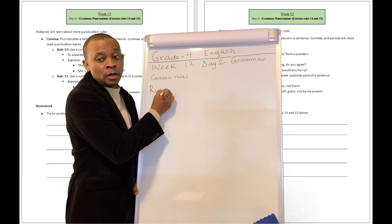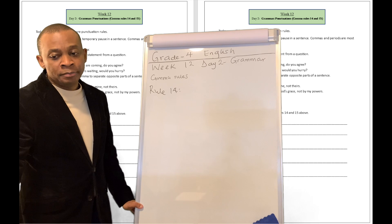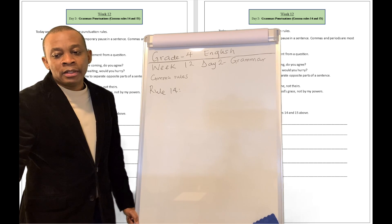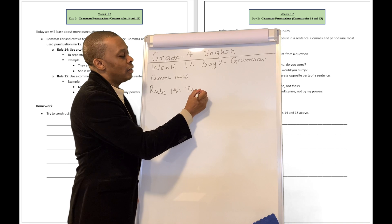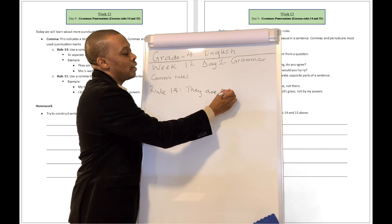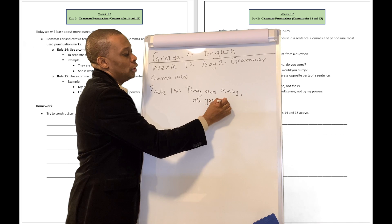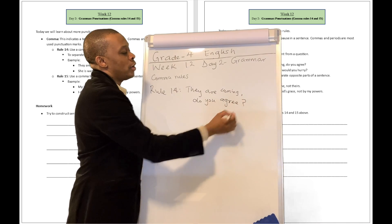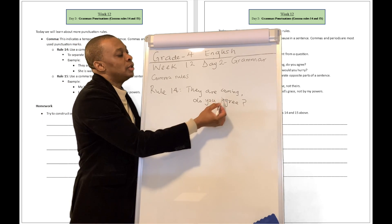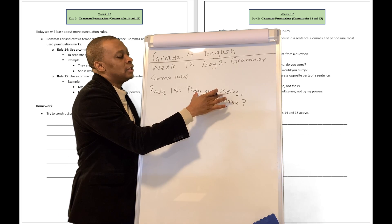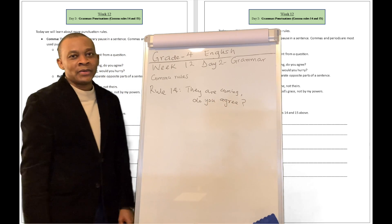Let's look at rule number 14. Rule number 14 says: use a comma to separate a statement from a question. For example: 'They are coming, do you agree?' So when you want to join a complete sentence together with an inquisitive sentence, you put a comma there.